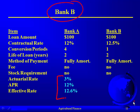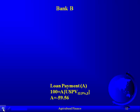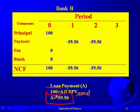Bank B is simpler because the conversion period is one, meaning annual payments — we're only going to make two payments. We're still borrowing $100. This bank is charging 12.5%, but with annual payments there are only two payments. Plugging that into our calculator, the payment is two payments of $59.56. In our table, the principal is $100 and there are only two annual payments of $59.56.